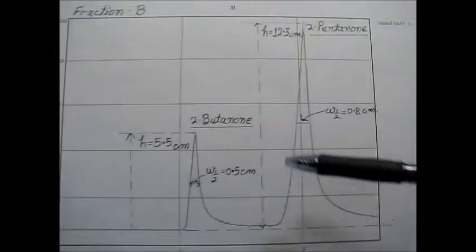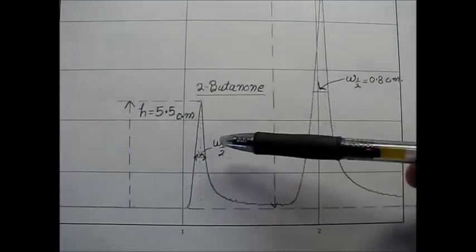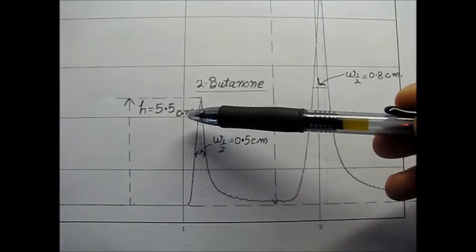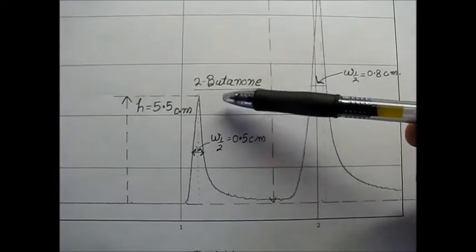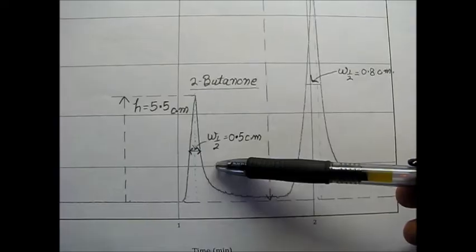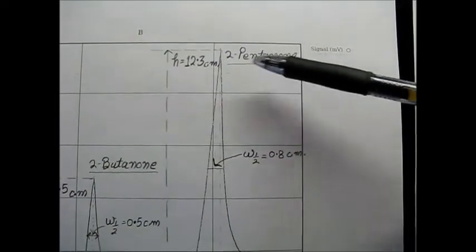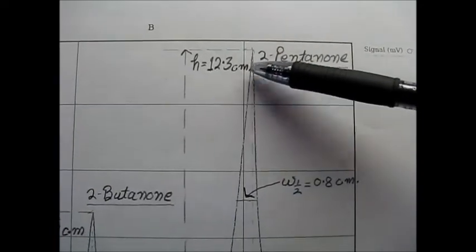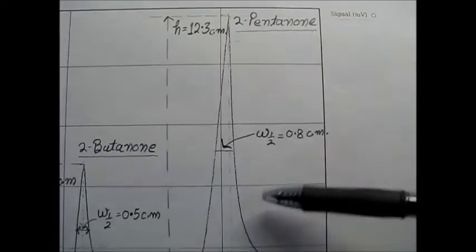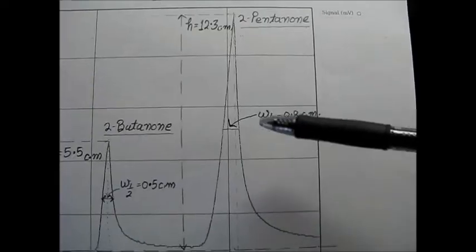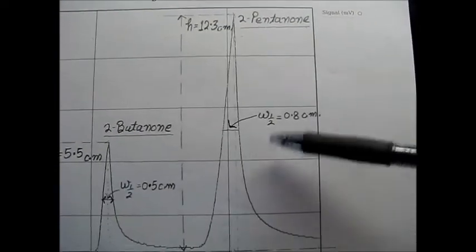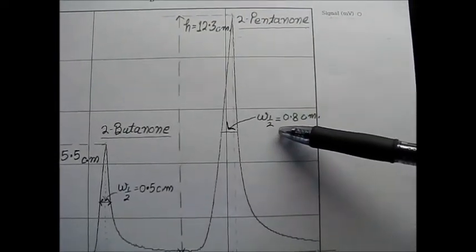What about the fraction B? Fraction B has height first peak 5.5 cm for 2-butanone and half width is 0.5 cm. 2-pentanone has 12.3 cm which is larger in amount. So B fraction have more pentanone and half width is 0.8 cm.